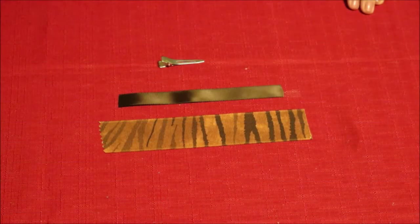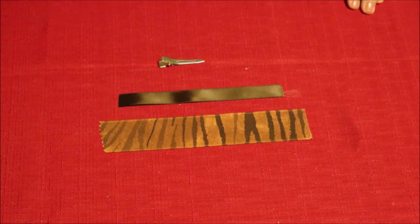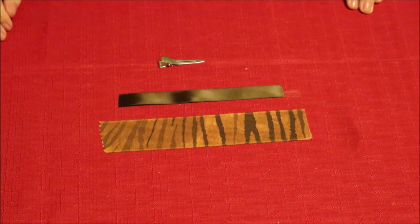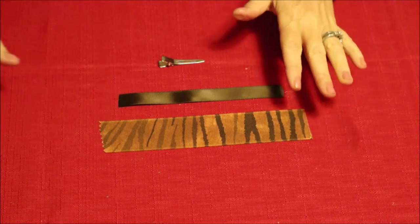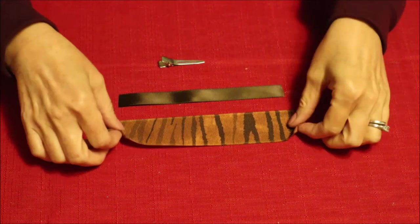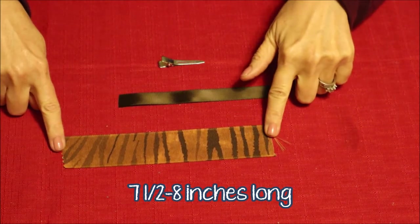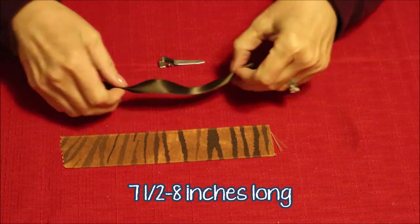Hello, and today on From Scratch to Finish we are going to learn how to make a very simple hair bow. All we need is a piece of ribbon that is seven and a half to eight inches long, another smaller piece that is about six inches long.